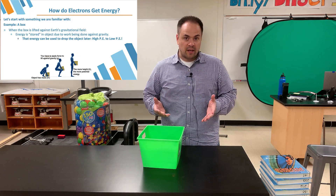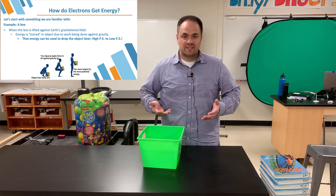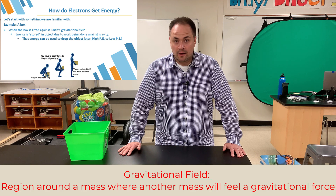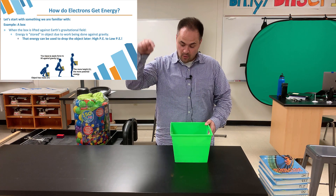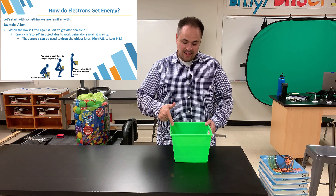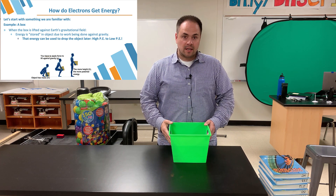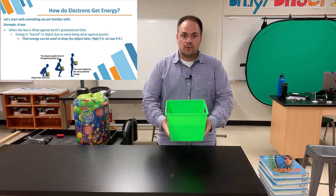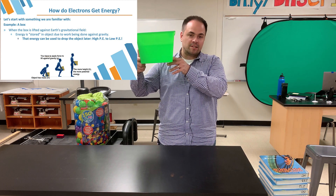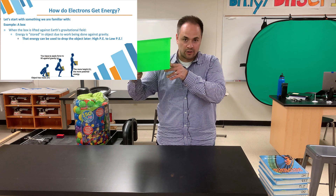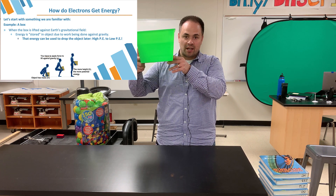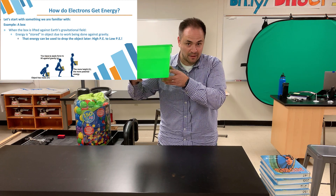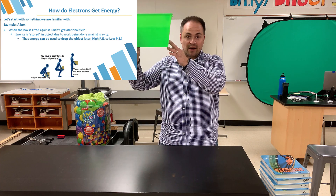Because everything in Earth's vicinity feels this force, we say that Earth has a gravitational field — defined as the region around a mass where another mass would feel a force. Since things usually want to go downward in Earth's field, if I want to lift something upward I need to use energy. I take energy from me and use it to lift the box. I have now given this box gravitational potential energy.